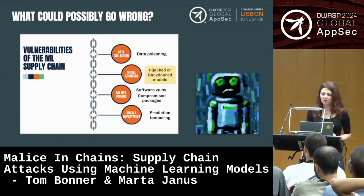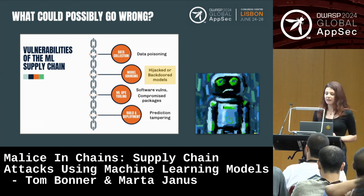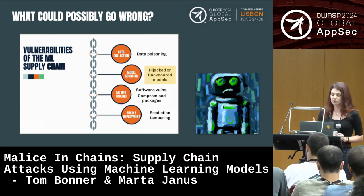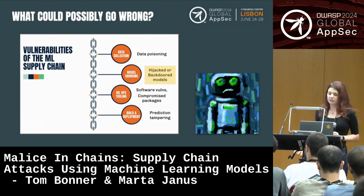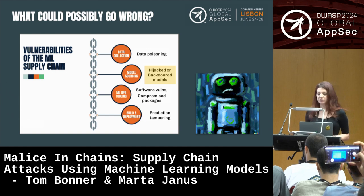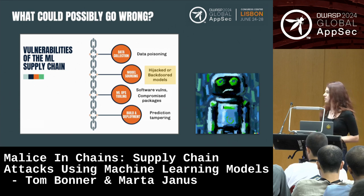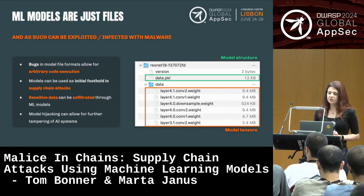So what could possibly go wrong? There are quite a few points on the AI supply chain where it can be breached and a supply chain attack can happen. In this presentation we are focusing only on the model sourcing stage, talking about hijacked and backdoored models. But there are other things like data poisoning that can happen at the data collection stage, lots of software vulnerabilities, and also prediction tampering which happens at build and deployment.